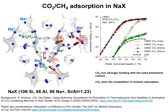Carbon dioxide binds strongly with the extra-framework cations due to its strong quadrupole moment. Comparing the component loadings for mixture adsorption, indicated by the filled symbols: the red circles are for CO2 loadings in the mixture, the green squares are for methane loadings in the mixture. These are compared with the corresponding unary isotherm loadings indicated by the open symbols — white spheres for CO2, white squares for methane.